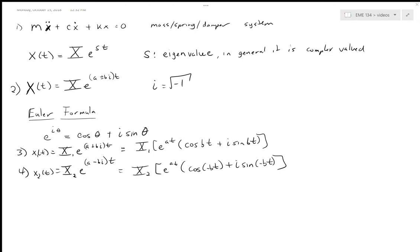Equation four can be reduced a bit using some simple trig identities to bring these negatives outside of the cosines and sines, so we can rewrite that as e^(at) times [cos(bt) - i*sin(bt)].